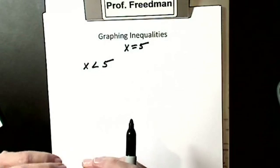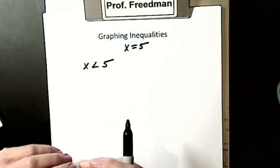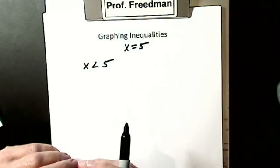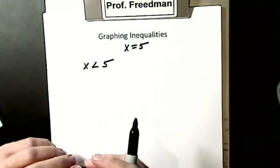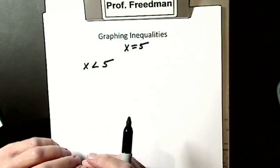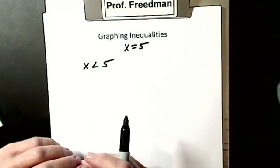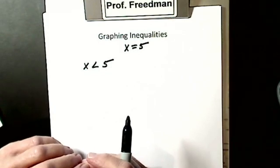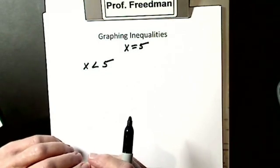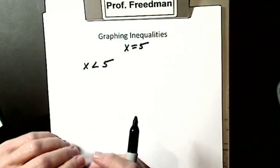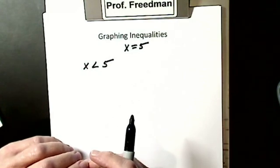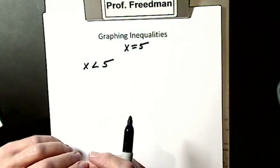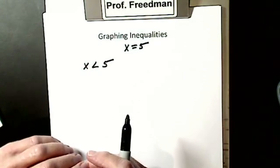If I asked for all the numbers less than 5, you couldn't list them because there is an infinite number. When our answer is infinite, we graph.